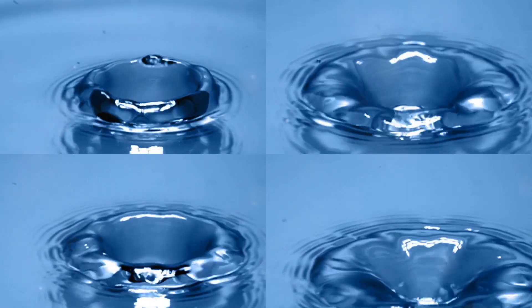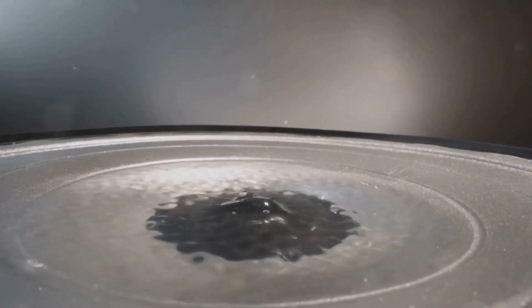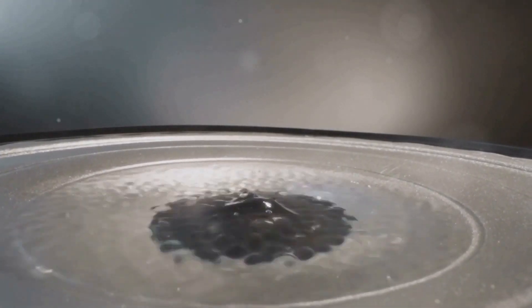Surprisingly, bouncing droplets also exhibit a form of memory. The waves generated by a droplet's previous bounces don't just disappear. They linger on the fluid's surface, influencing the droplet's future trajectory. This wave field, carrying information about the droplet's past, guides its motion, creating a form of memory.